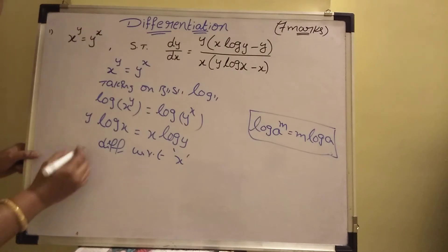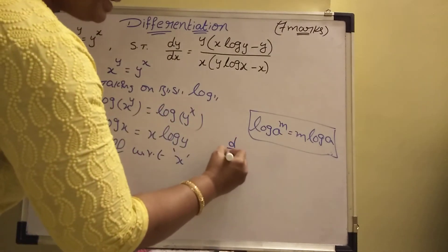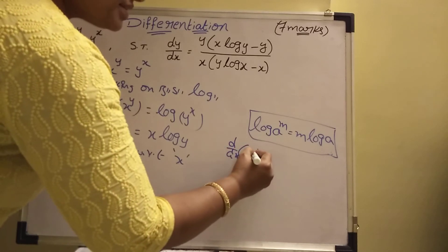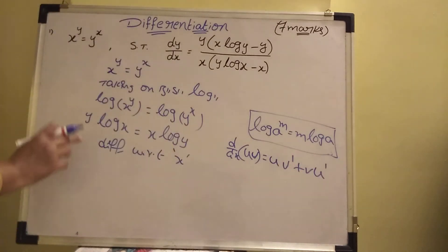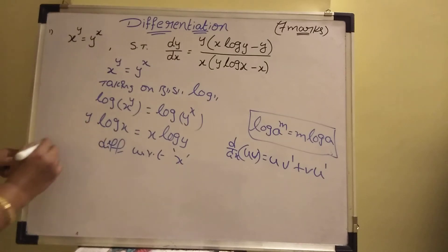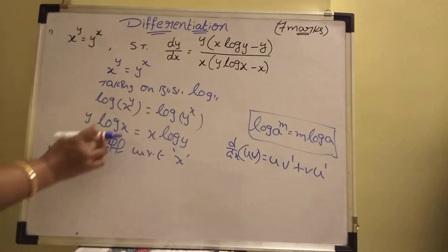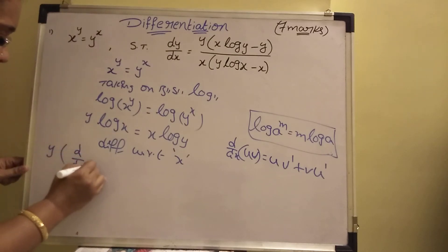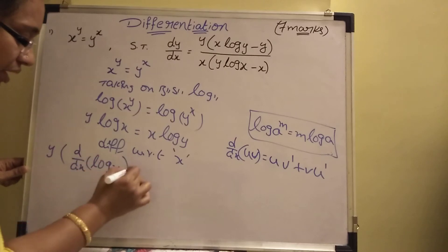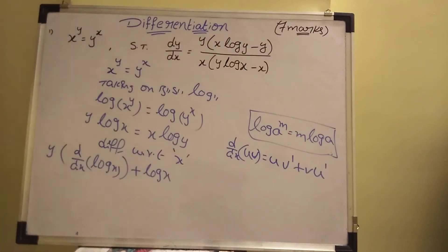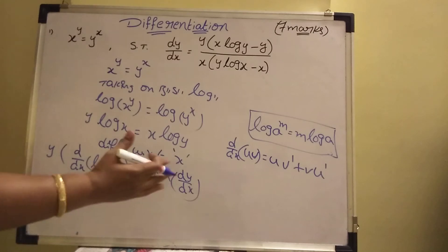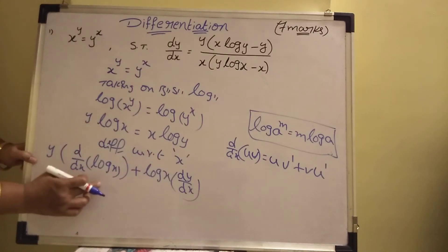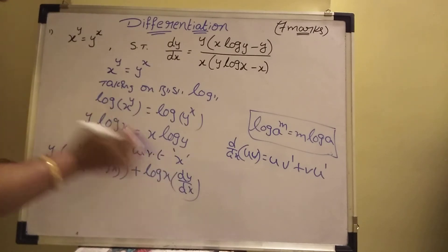Now d by dx of y log x. The formula is d by dx of uv equals u·v' plus v·u'. Here u is y and v is log x. So: y into d by dx of log x, plus log x into d by dx of y, that is dy by dx. This is the left hand side.